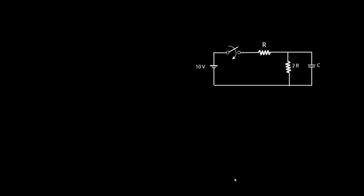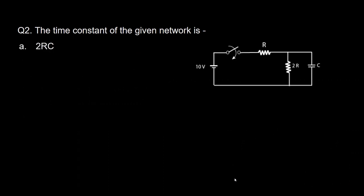Moving to the next question: here we have a transient circuit, and we need to find the time constant of the given network. The options are: 2RC, 3RC, 2/3 RC, and RC/2. The time constant for an RC circuit is τ = R × C.